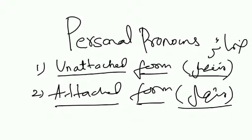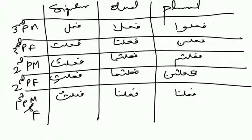Now let's have a look at each. As we have seen in the last session, this kind of chart shows the third person masculine, third person feminine, second person masculine, second person feminine — singular, dual, plural — as well as first person masculine and feminine.